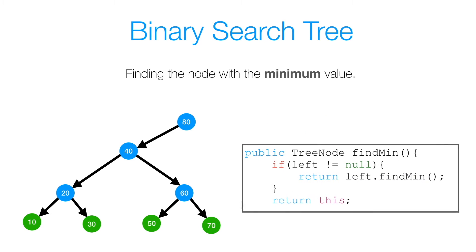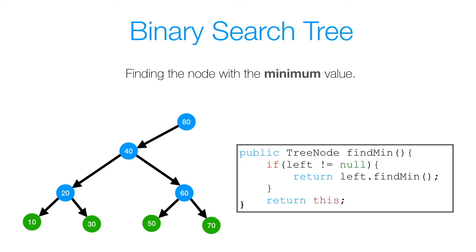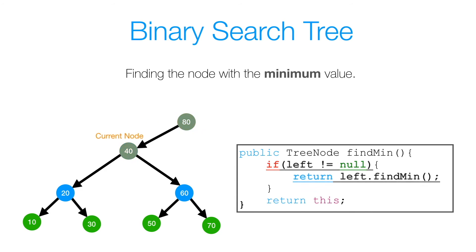Now let's move on to our findMin method. In this method, we're going to recursively call findMin on our current node's left subtree, until the point where our left is equal to null, because at that point we know we've found the minimum value in our binary search tree. Starting from our root node 80, the first thing we do is check if our left is not equal to null. In this case, our left is not equal to null, so we'll call findMin on 80's left subtree.